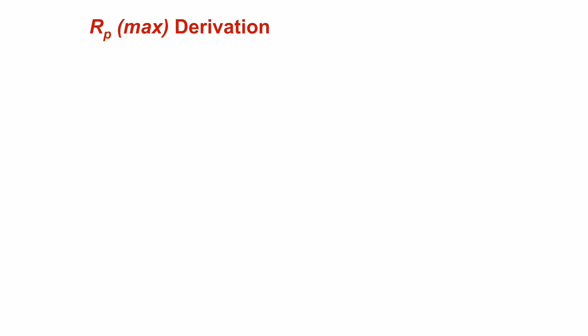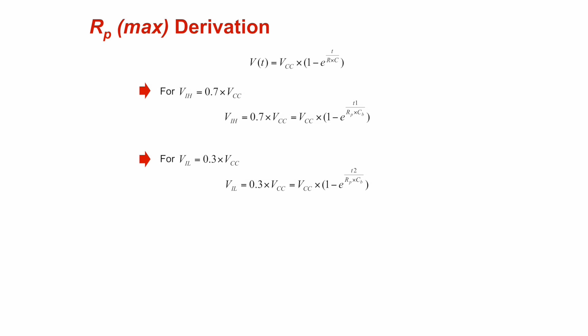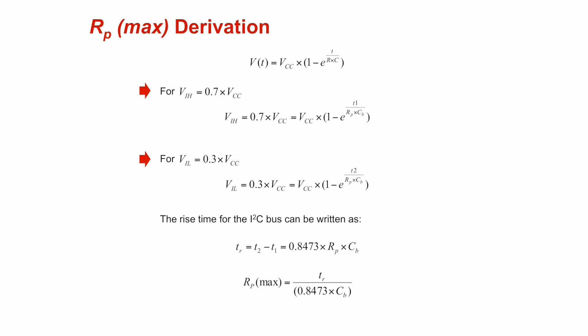Now a quick snippet as to how we derived this equation. We treat the resistance RP and the capacitance CB of the I2C bus as a typical RC circuit. As the value of the voltage V depends on time T, the pull-up response of an RC circuit to a voltage step of amplitude VCC starting at time T equals zero is written as follows. VIH is the logic input high voltage and VIL is the logic input low voltage. Thus the rise time, being the difference of the two instances of time, is a factor of the pull-up resistor and the capacitance load.